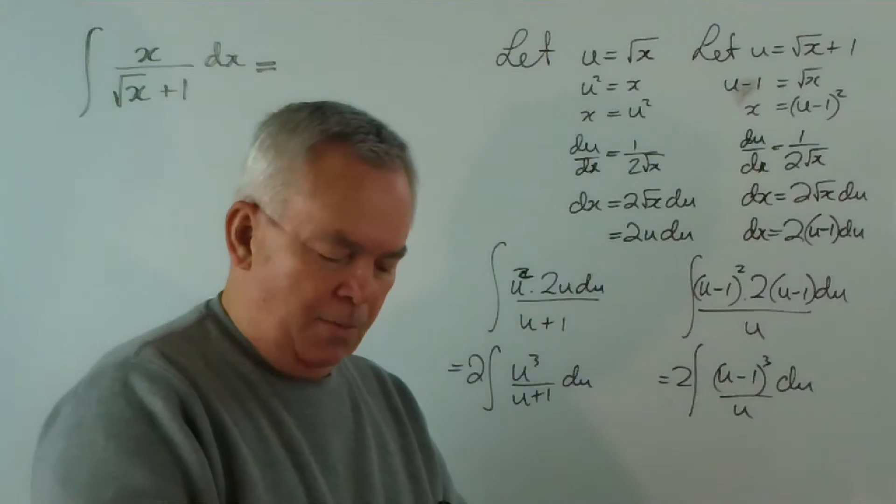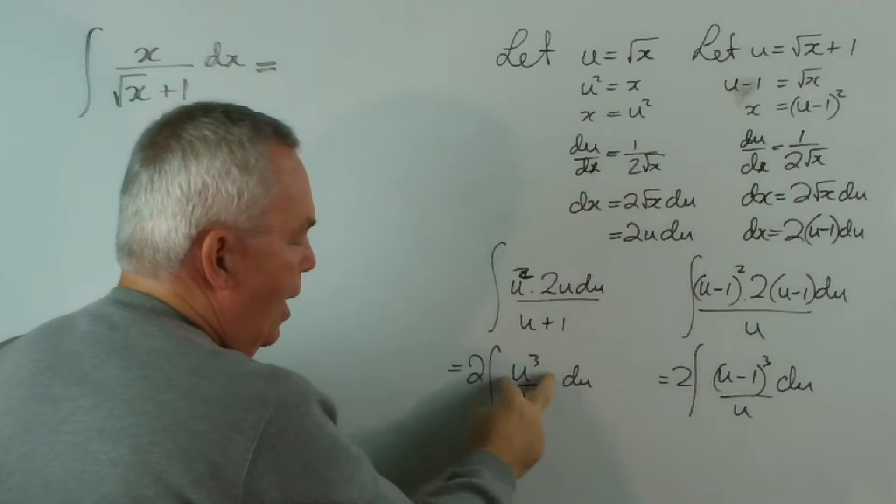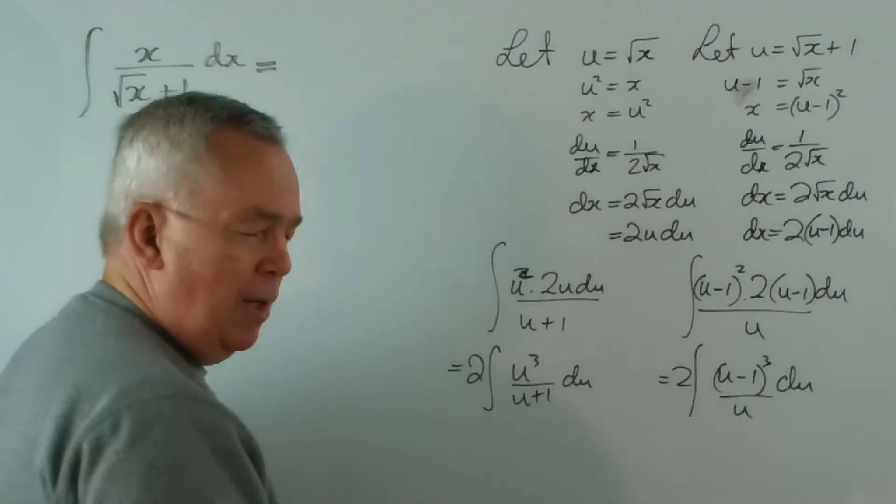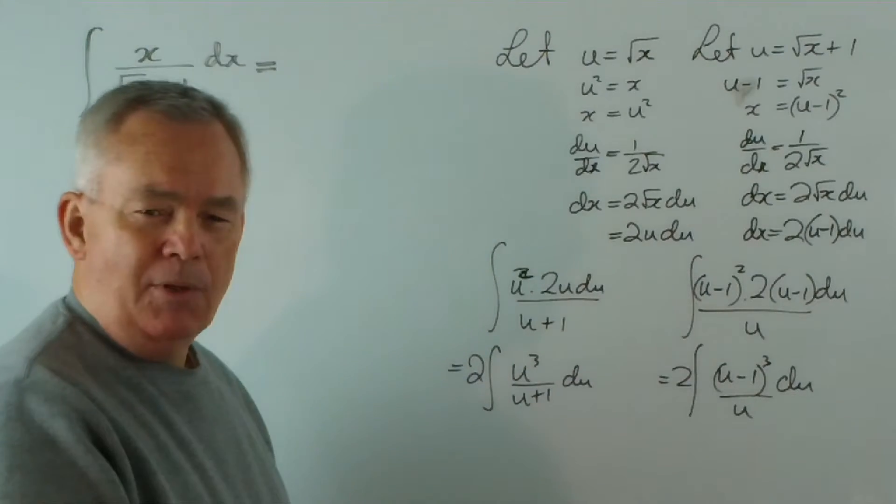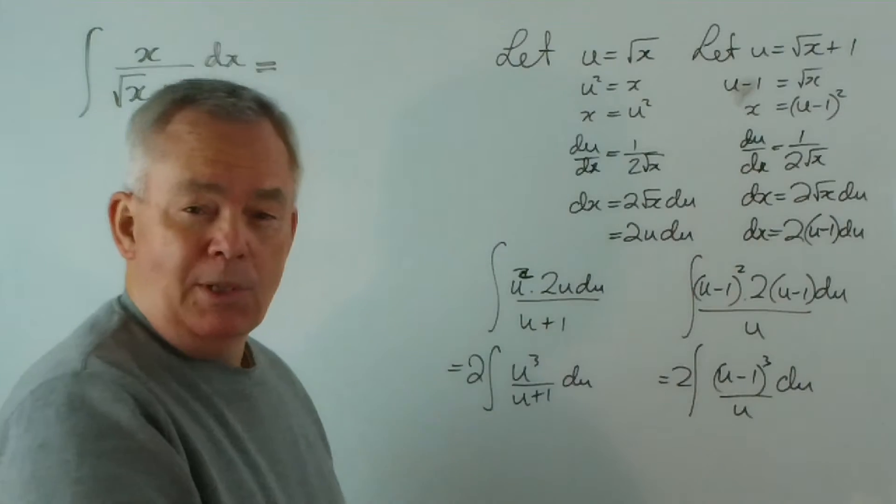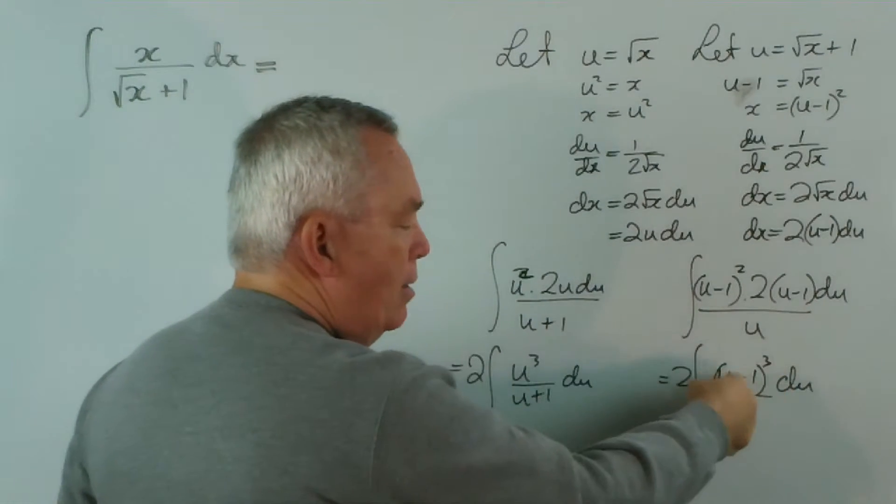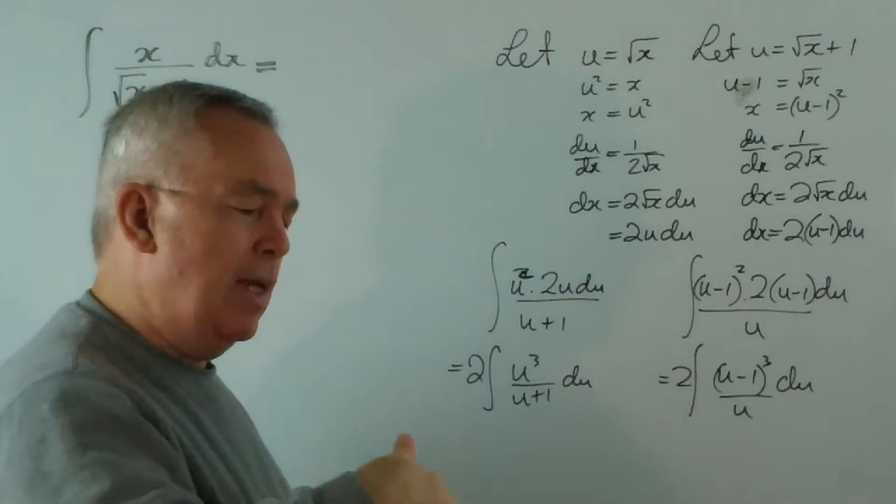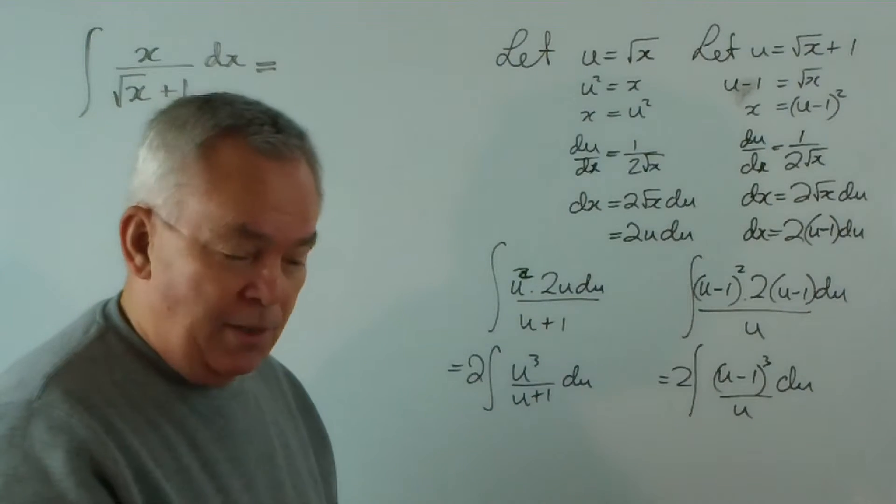And, simplifying this one, again putting the two out the front, we get u minus 1 cubed du over u. Why am I going to do all this bother? I want you to observe something here. Here, we have to perform a division. And we're dividing by a binomial. Not, in itself, a particularly difficult thing. Here, we're dividing by something considerably simpler, just the u. But, our numerator is a binomial cubed. Now, we can expand that using our knowledge of binomial expansions or binomial coefficients or Pascal's triangle.